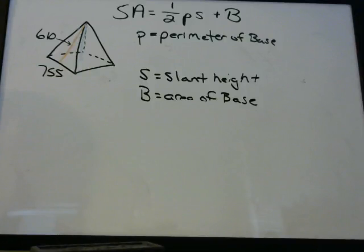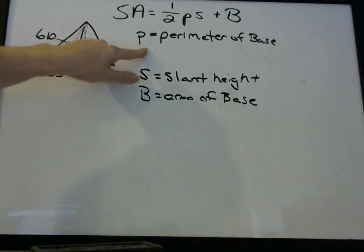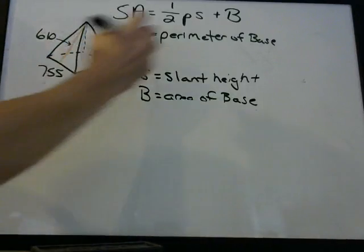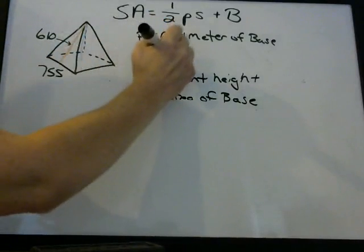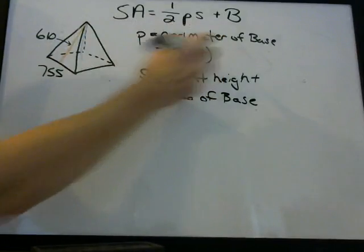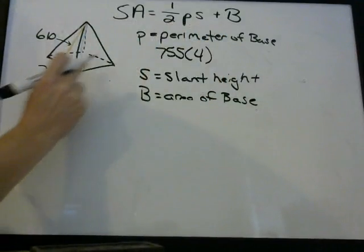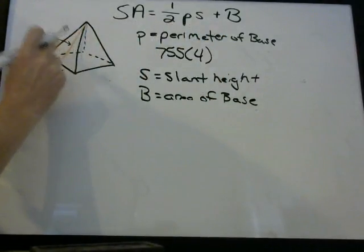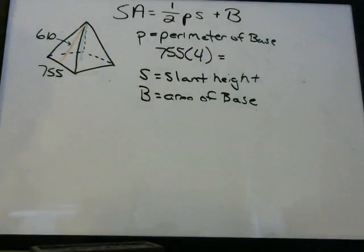What is the surface area of this whole pyramid? We do the exact same thing: one-half P. P is the perimeter of the base — I'm just going to do 755 times 4. You can add 755 four times or multiply 755 times 4.